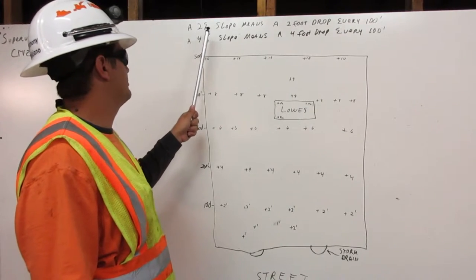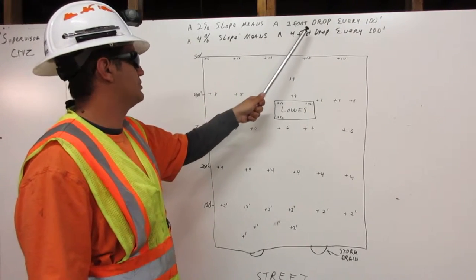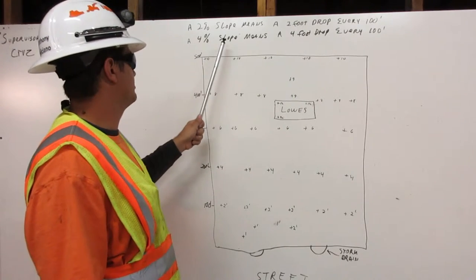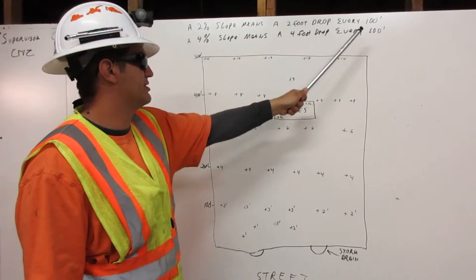A 2% slope means a 2 foot drop every 100 feet. A 4% slope means a 4 foot drop every 100 feet.